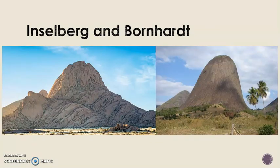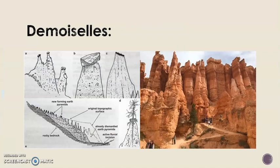Moving on to inselbergs, or bornhardts. These are somewhat controversial landforms with various opinions regarding their origin. They can mostly be defined as a residual hill or mound left behind due to its relative resistance compared to the surrounding lithology. Next, demoiselles — pillars of resistant rock, also called rock trees. These are formed from the binding effect around the roots of plants, and serve as proof of how soil erosion can be prevented by afforestation.